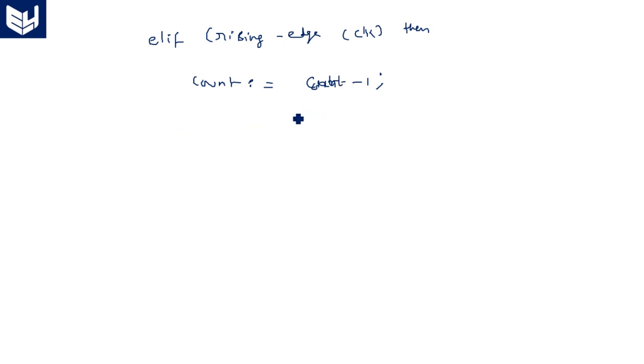See here, this is the complete logic. This particular line can change it to count plus 1 when we go for incremental. For up counter, count is equal to count plus 1. This is for up counter.